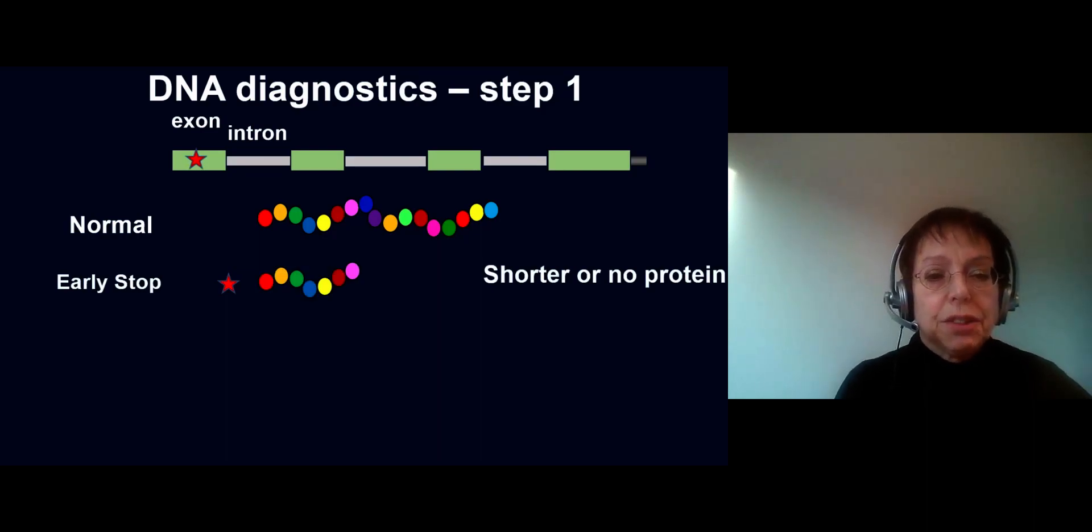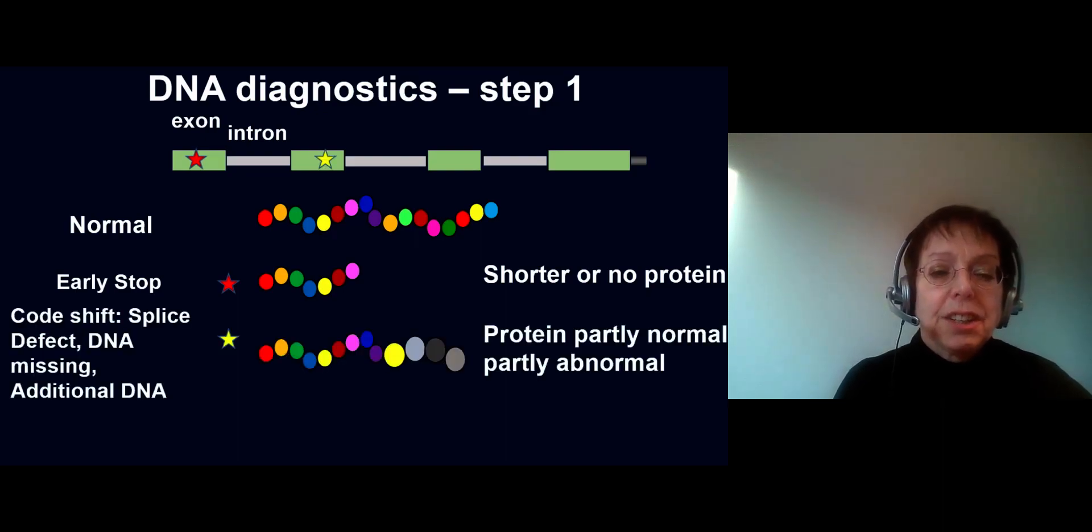Then there can be a code shift, either by a splice defect or when a small part of DNA is missing or some additional DNA is in the exon. The protein can be partly normal and partly abnormal. The 2299 del G mutation is such a mutation where the code for normal protein is interrupted. There are also changes where larger parts are missing. When the code is not shifted, a larger part of the protein can be missing.